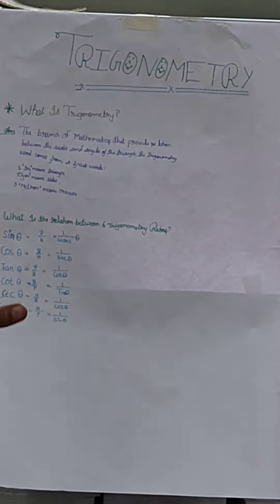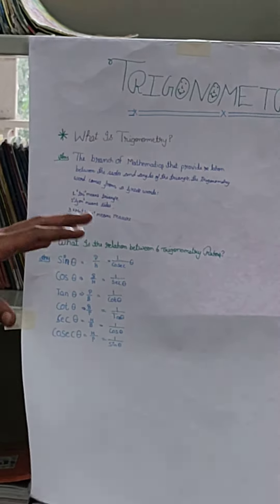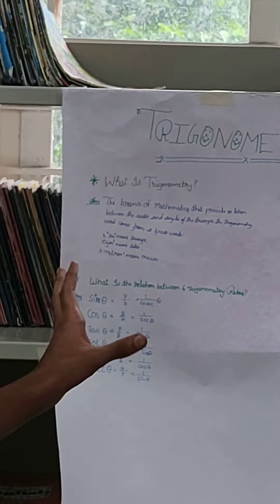This is a basic branch of mathematics. This shows the relationship between the sides of the triangle. This is a diagram of the triangle.